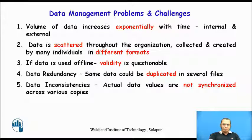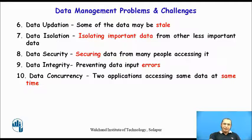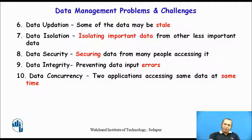Data inconsistency means actual data values are not synchronized across various copies. In a replicated database, multiple copies of the same data are maintained, and synchronizing them can be a challenge. Data updation is also a challenge — some data may be stale, and whenever a new transaction happens, the data needs to be updated immediately. Isolating important data from less important data, identifying what is important for the organization, is also a challenge. Security is a big concern — hacking and malware can threaten data, and protecting against this is a major challenge. Preventing data errors is also important, as errors can cause problems even after processing.